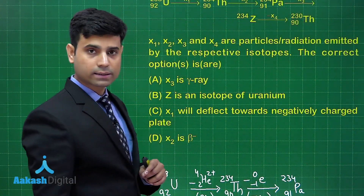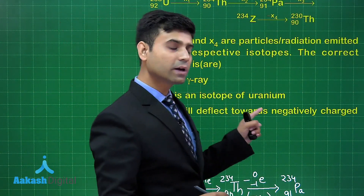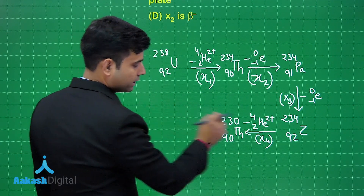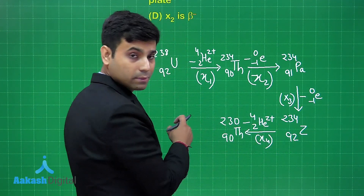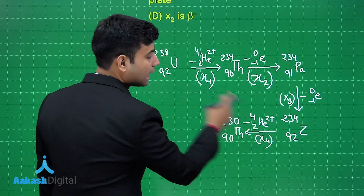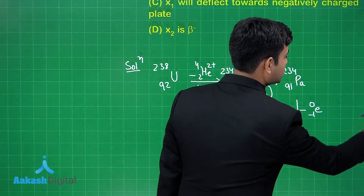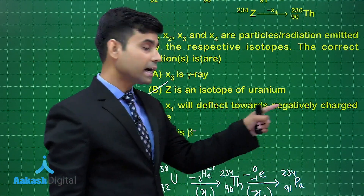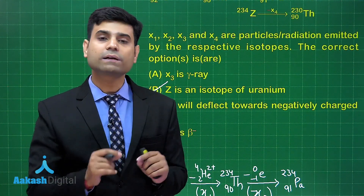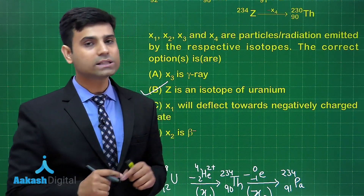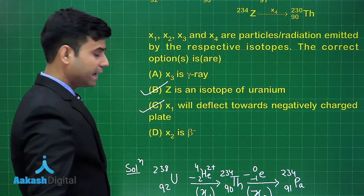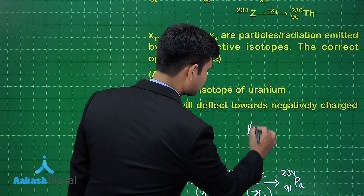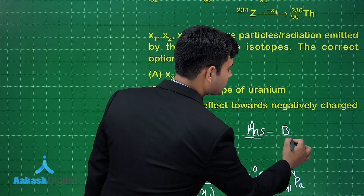Option A — x3 is a gamma ray — that's wrong. Option B says Z is an isotope of uranium: uranium is ⁹²U²³⁸ and Z is ⁹²Z²³⁴, same atomic number but different mass numbers, so they are isotopes — B is correct. Option C says x1 deflects towards negatively charged plate: x1 is alpha particle, positively charged, so it deflects towards the negatively charged plate — C is correct. x2 and x3 are both beta particles, confirming D is correct. The correct answers are option B, C, and D.